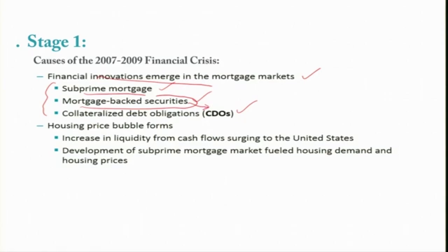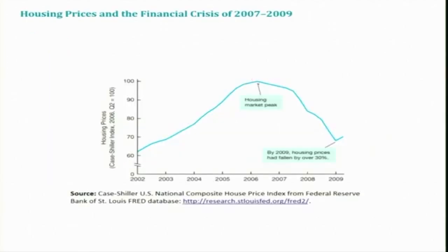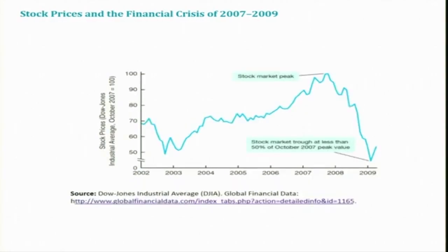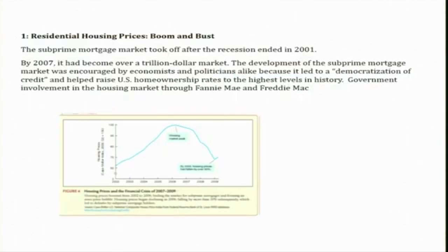The historical development here is that there was an increase in liquidity from cash flows surging into the United States after 2001, when the economy was near recession and then bounced back. As a result, the development of the subprime mortgage market boosted housing demand and housing prices. Housing prices peaked at the end of 2006, and the stock market also peaked in the beginning of 2007.